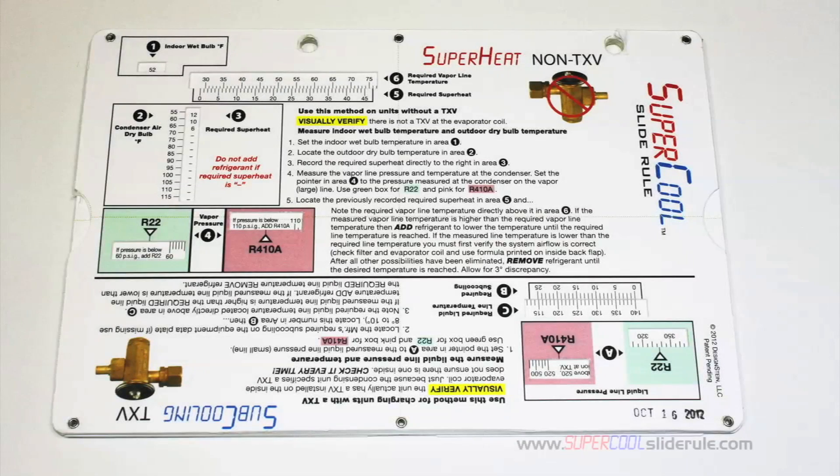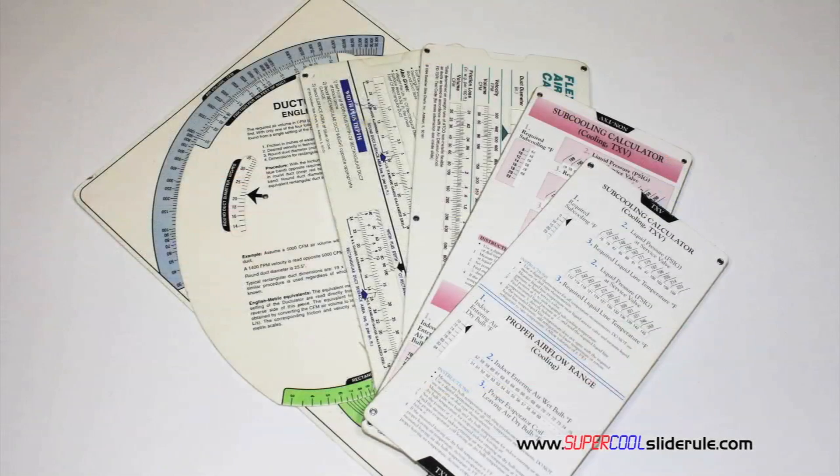Hello. I'd like to take a minute to introduce you to the coolest tool in the HVAC industry. Historically, technicians have carried four or five different slide rules. You have one for R22, one for R410A, one for metal duct sizing, one for flexible duct sizing, and yet others for diagnostics or troubleshooting.